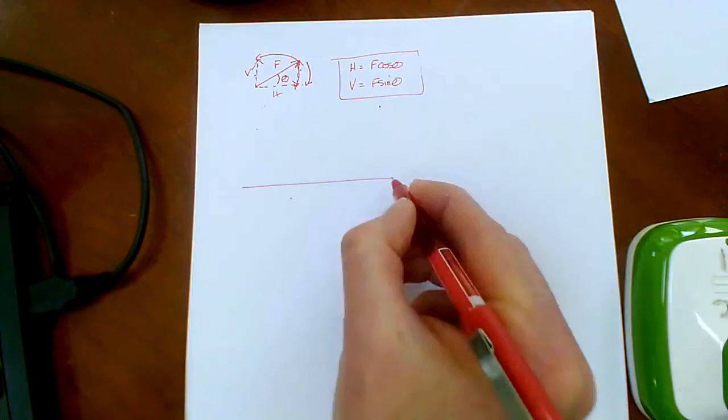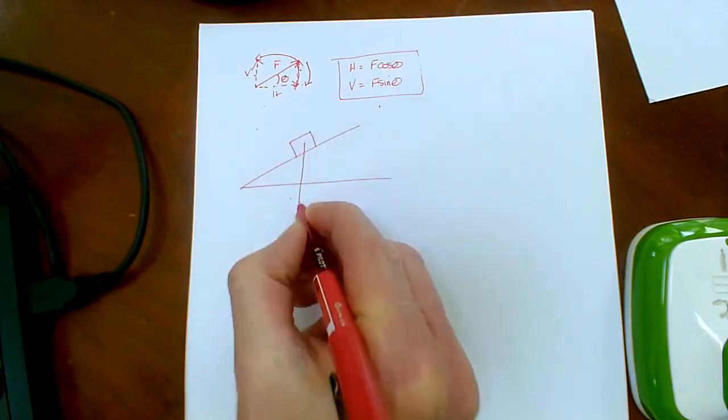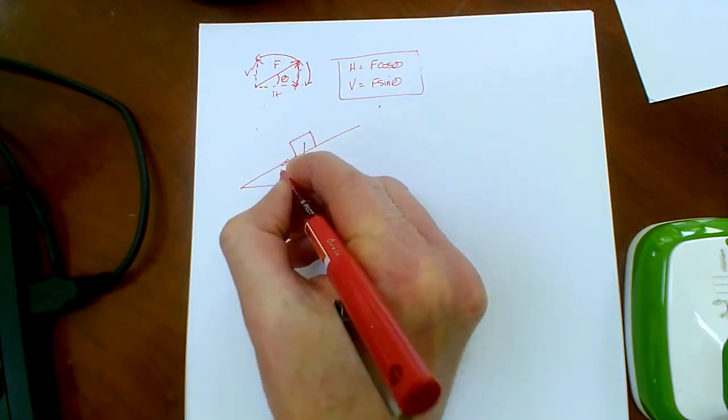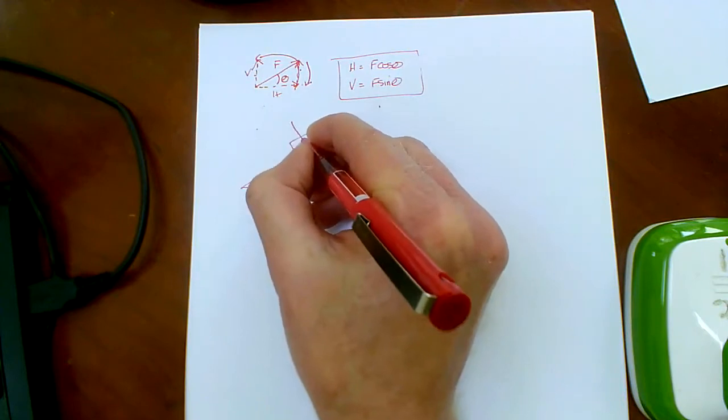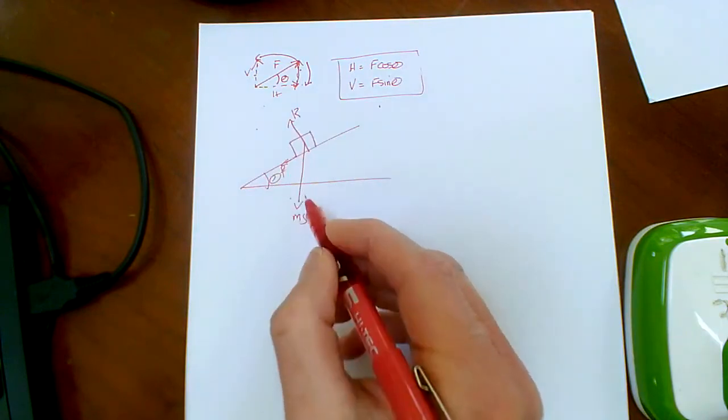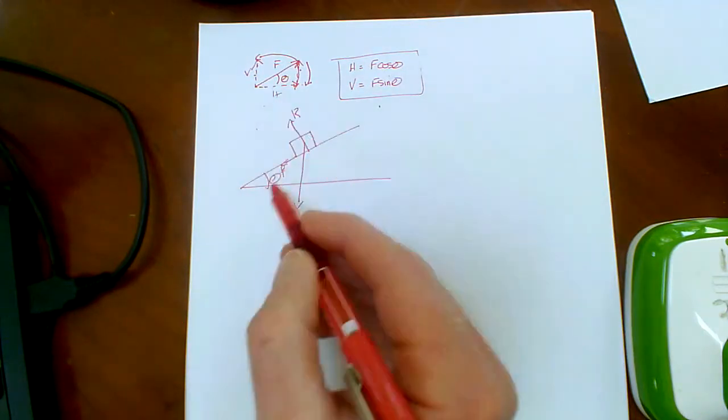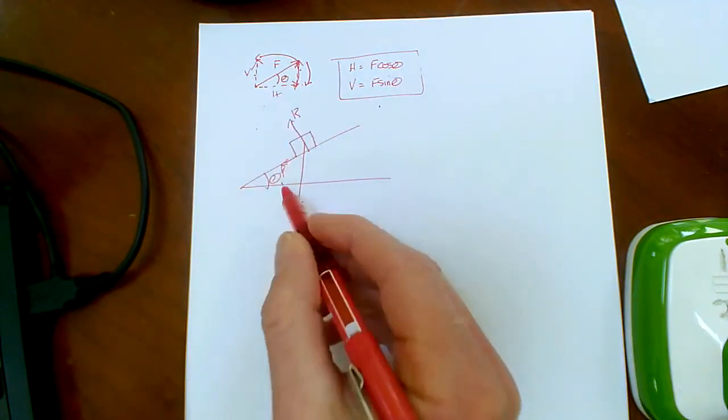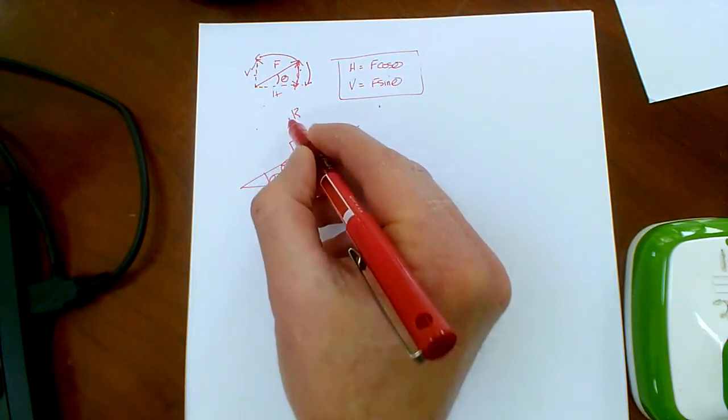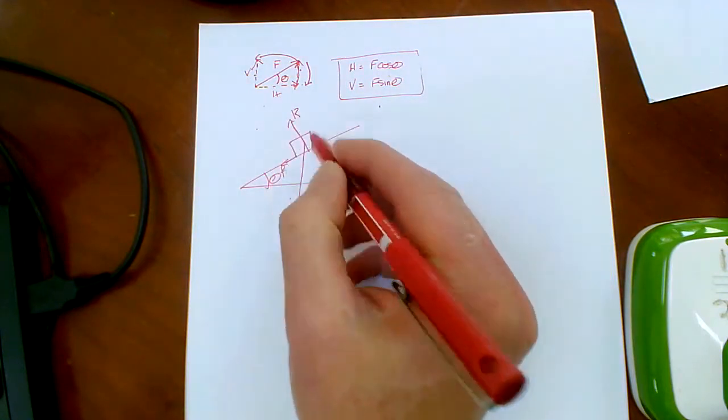If we were to take it to a more complex example. It makes sense to resolve along and at right angles to the slope here. Because I've got friction acting down the slope, so that's parallel with the slope. I've got the normal reaction at right angles to the slope. So to resolve along and at right angles to the slope makes sense.